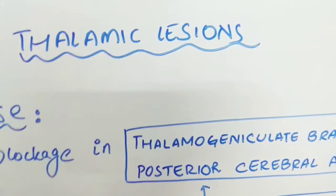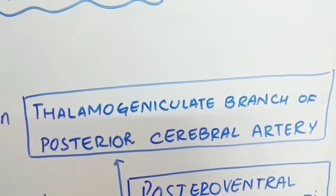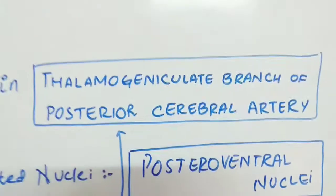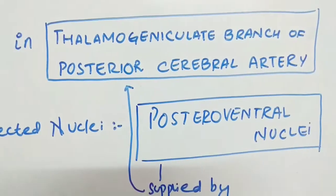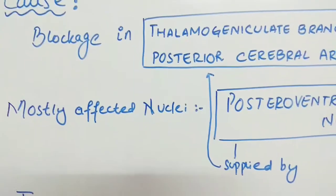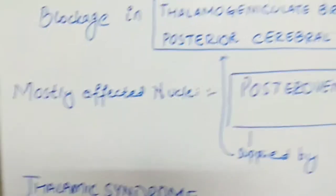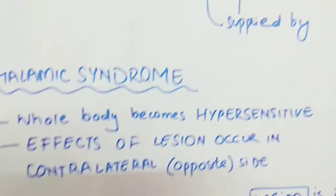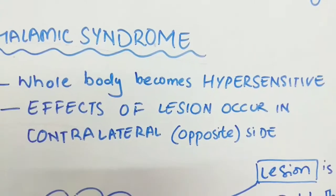Today we are going to discuss thalamic lesions. Thalamic lesions are due to the blockage in the thalamogeniculate branch of the posterior cerebral artery. When this artery gets blocked, it affects mostly the posterior ventral nucleus which is supplied by this artery. The thalamic lesions lead to thalamic syndrome, in which the whole body becomes hypersensitive and the effects of the lesion occur on the contralateral side, which is the opposite side.